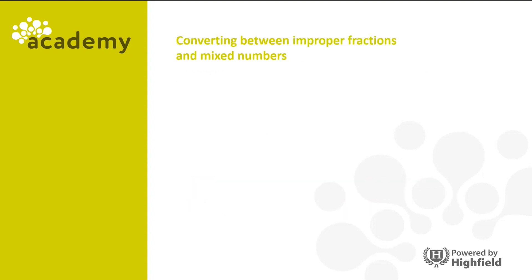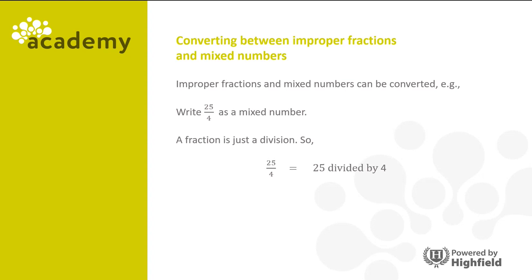Let's look at converting between improper fractions and mixed numbers. If we're going to write 25 quarters as a mixed number, we need to remember that a fraction is just a division. So 25 quarters is 25 divided by 4. If we divide 25 by 4, we get 6 with a remainder of 1. Because our denominator is 4, we write that remainder 1 above a denominator of 4, so we get 6 and a quarter.